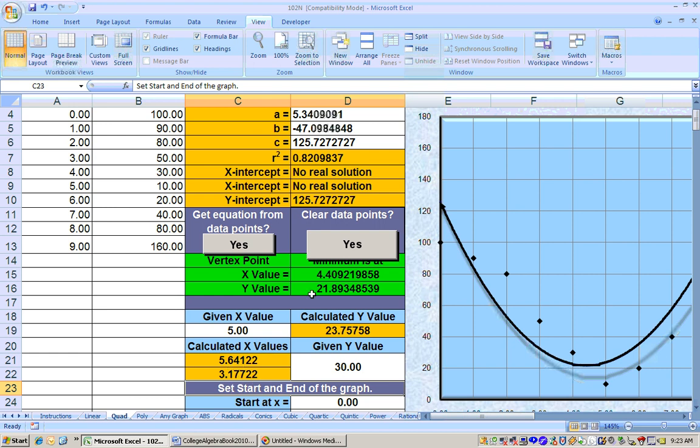And the next couple problems ask, when will the bacteria be at its lowest level? Well, right here is the minimum, and that minimum is at day 4.4, and the minimum level is 21.89 is the lowest concentration that it ever goes through. You can see that on the graph as well.